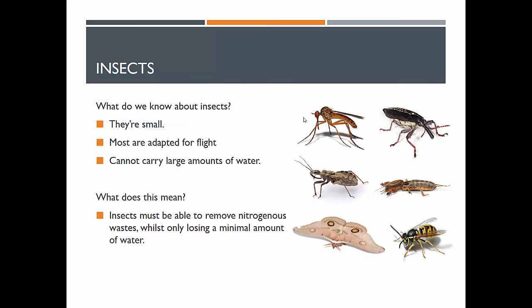We need to build our body of evidence. What do we know about insects? They are small, most have wings that allow them to fly, and because they are small they can't actually carry a lot of water. They have irregularly shaped bodies and there is no actual reservoir of water in them. All of this means that insects basically have to be able to remove nitrogenous waste while only losing a small amount of water — they just can't afford to lose it given their tiny bodies.